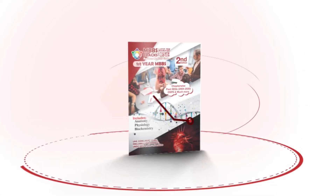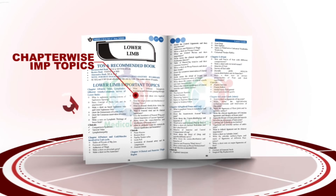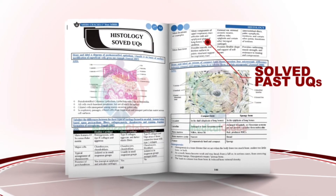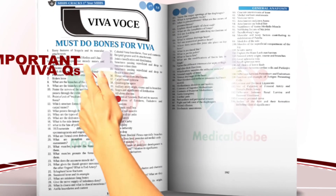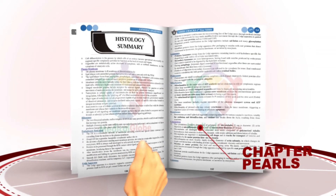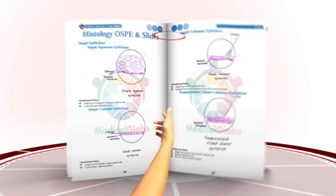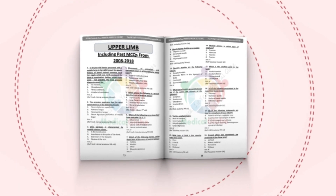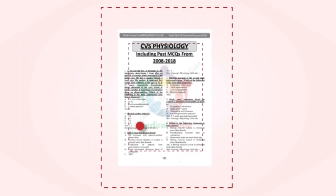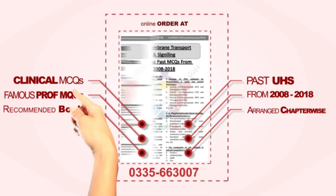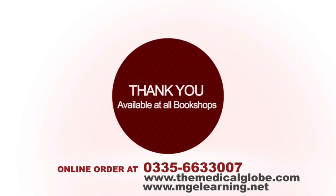Medical Globe introduces its series of successful publications — MBPS Cracks — the benchmark of all, containing all chapter-wise questions of prime importance, all annual and solved university questions, chapter polls, and all labels, histological and anatomic models in high resolution for distinction-level OSPE preparations. Medical Globe has also launched MCQ Cracks, encompassing UHS, NAMS, and many others. Practice MCQs and topic-wise MCQs. Get your MCQ and MBPS Cracks at your doorstep by placing your order at 0335-6633-007.